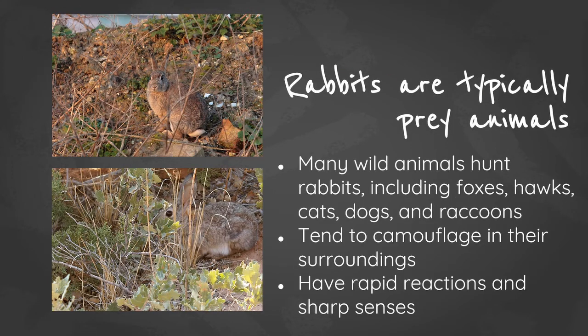Rabbits are typically prey animals. Many wild animals hunt rabbits — foxes, cats, dogs, raccoons, hawks. Rabbits tend to camouflage in their surroundings to hide from predators. If you've ever had a rabbit as a pet, you know they have very rapid reactions and sharp senses — you just see the ears go up as they look in a new direction.